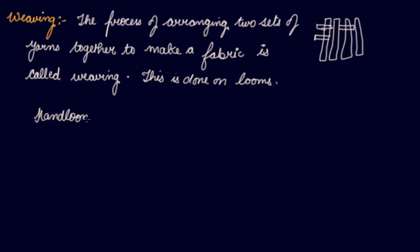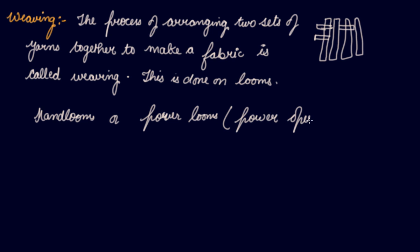Weaving is done on looms. Through weaving you get fabric from yarns. First you take the cotton and do ginning, after that you do spinning — converting the fibre into yarns — and after that you do weaving, converting the yarns into fabric. The process of arranging two sets of yarns together to make a fabric is called weaving. This is done on looms — either hand looms or power looms. Hand looms are operated by hand, and power looms are operated by machines.